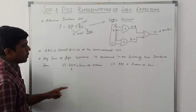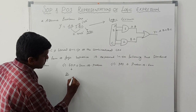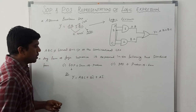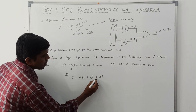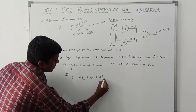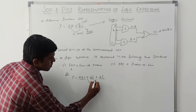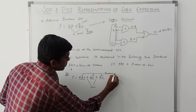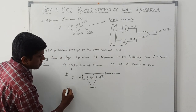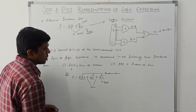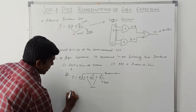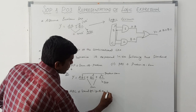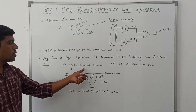The first standard form is SOP, which means Sum of Product. For example, the Boolean expression y equal to ABC plus BC-bar plus AC-bar. Here A, B, C are the literals or inputs of the combinational circuit. This expression has three product terms, and the sum of these product terms means this Boolean expression is called SOP form.